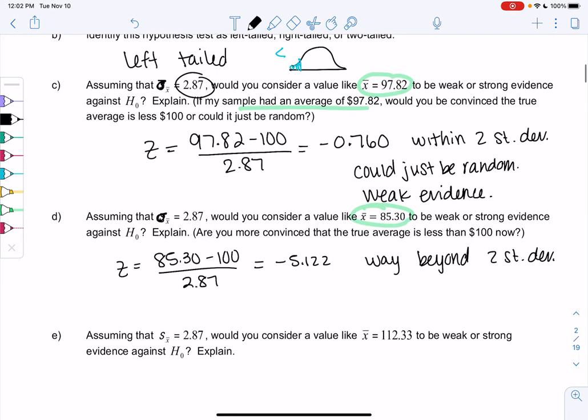That's basically the main idea. Two is my cutoff. If it's only a little bit different, it might not actually be different. It might just be random. But if it's a lot different, then I'm more convinced.